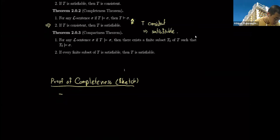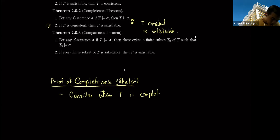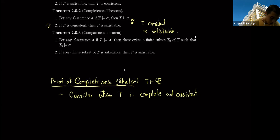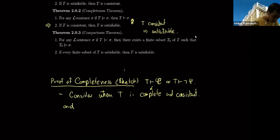The first part of this proof considers a special case. Instead of the general case, we consider when T is complete and consistent. This means that for any formula φ, you should have either T proves φ, or T proves the negation of φ — that is the definition of completeness. We're also going to add one more condition: that T has the witness property.